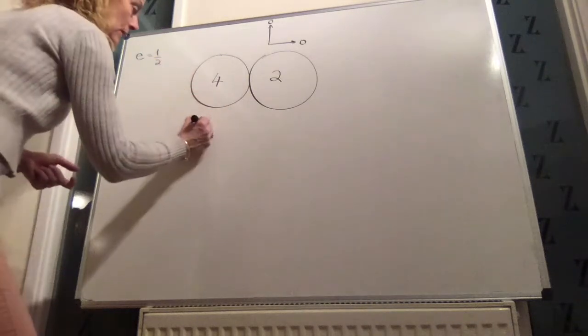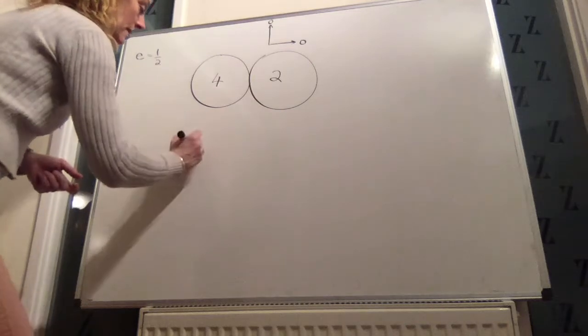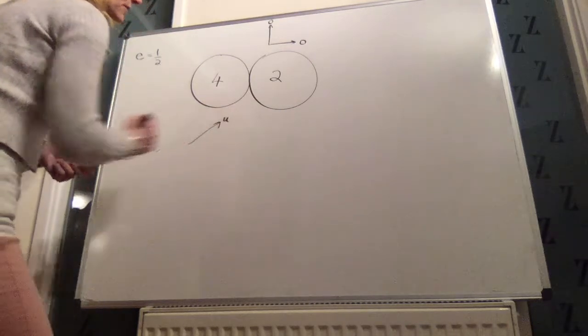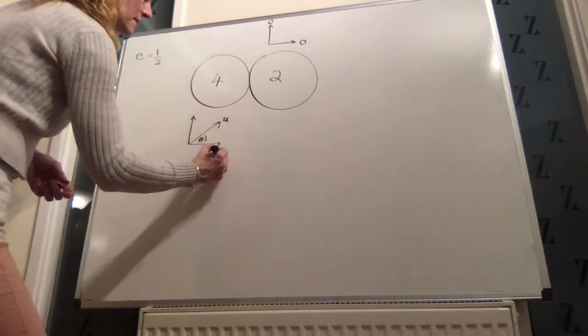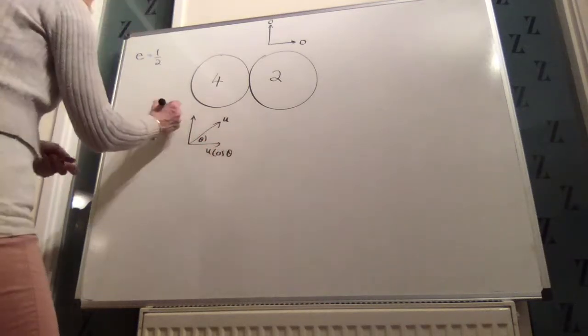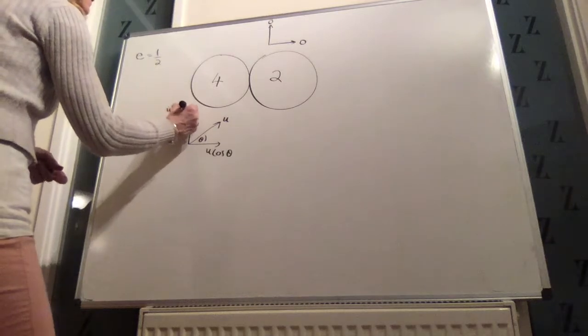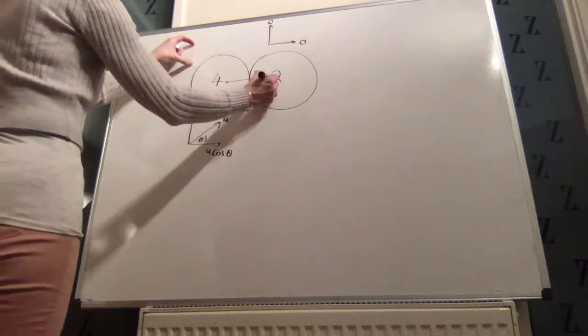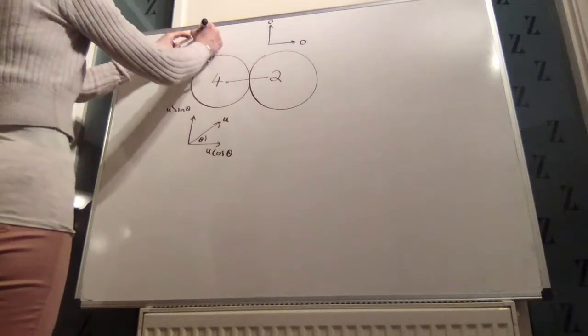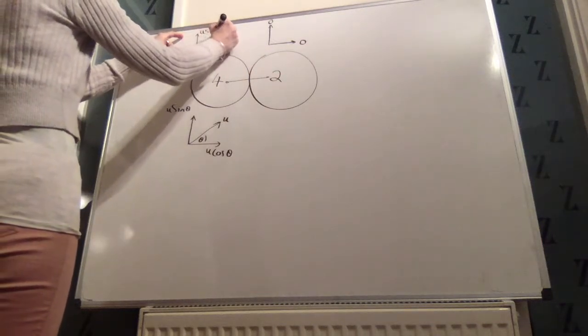So we'll fill in. All we know so far about this one is it must have been going at a velocity u beforehand. So we can label this, if we call that theta, that's u cosine theta and that's u sine theta. Again, the velocity perpendicular to the line of centres does not change. So we know that that is u sine theta.